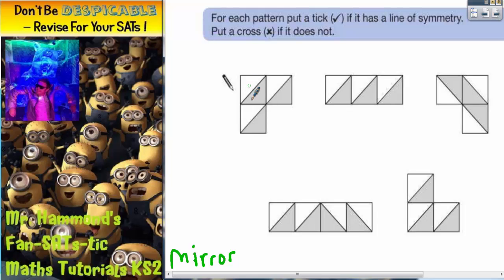Now the catch with this one is that the squares on the shapes have got triangles in them as well and some of them have been shaded in.